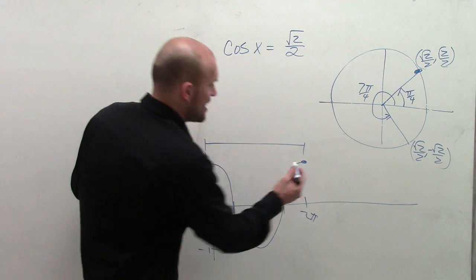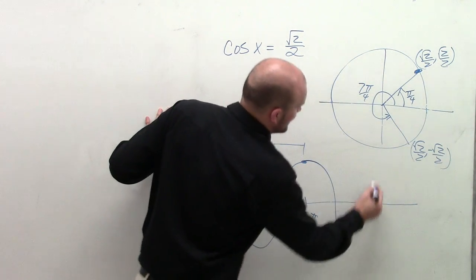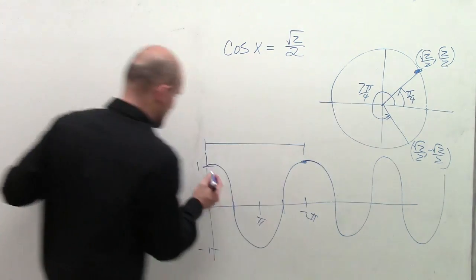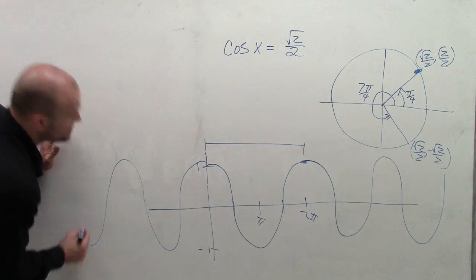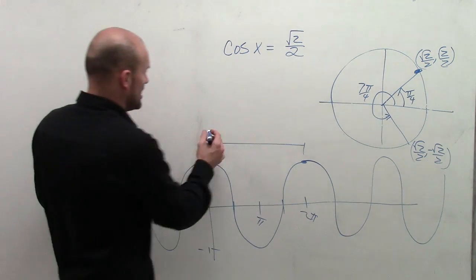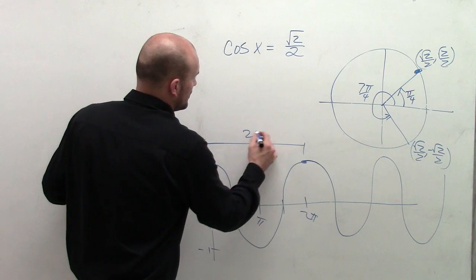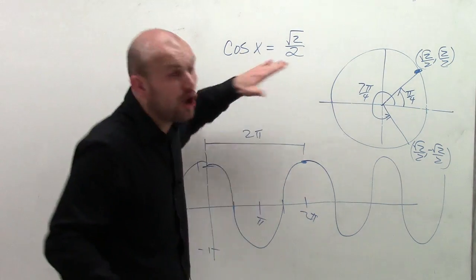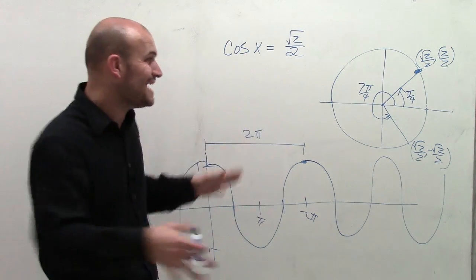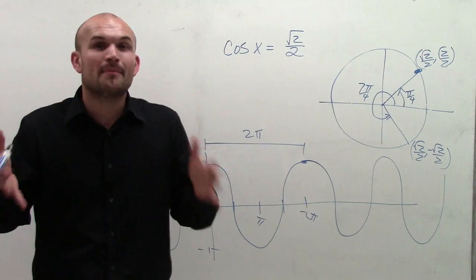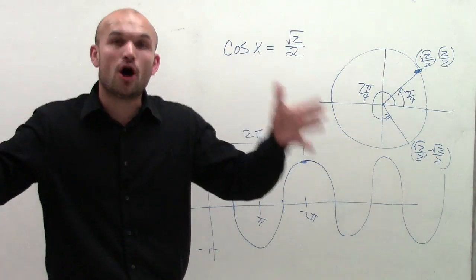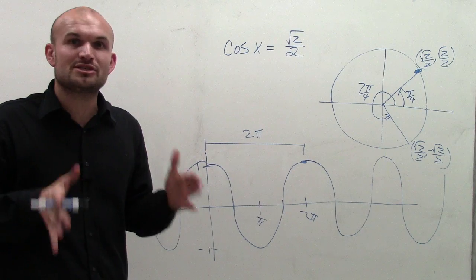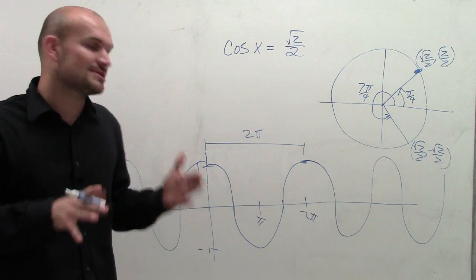The cosine graph continues on and on in both directions — it's not just the interval of 0 to 2 pi. So if I ask you to find all the solutions, not just the solutions on 0 to 2 pi, we need to look at the distance between each and every solution.